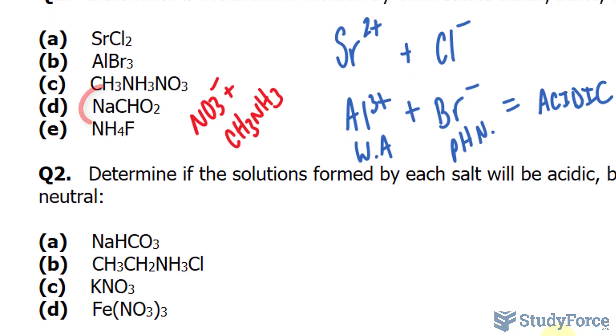the Na+ cation is a counter ion for a strong base and is therefore pH neutral. The CHO2- anion is the conjugate base of a weak acid and is therefore basic. Coming together, it forms a basic solution.